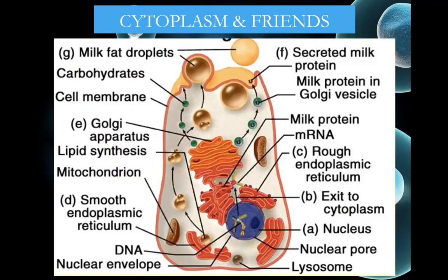Looking at our cell diagram again: the rough ER is connected to the Golgi apparatus — proteins are made using information from the nucleus, sent to the Golgi, packaged up, and allowed to leave. The smooth ER produces lipids, such as milk fat in this example. The mitochondria is where cellular respiration occurs.